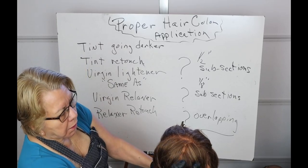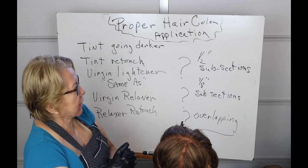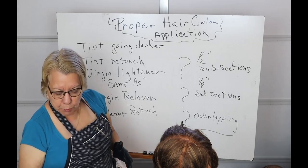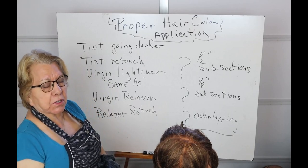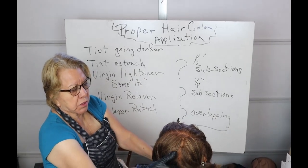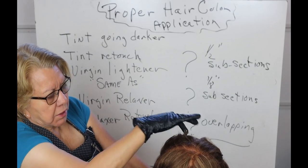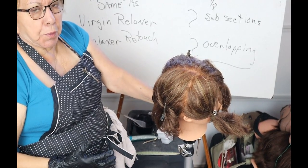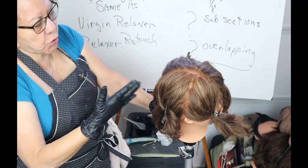One of the things we want to practice today is proper hair color application using the brush method. We want to make sure our mannequin is separated into four quadrants — center frontal to center nape, tip of the ear to tip of the ear — and then you section each one off. This is part of keeping your color organized.